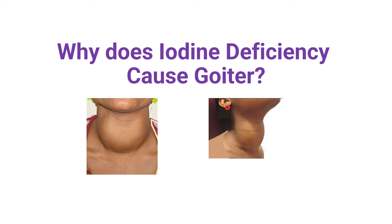Have you ever wondered why deficiency of iodine in the diet causes the thyroid gland to enlarge? Why does goiter occur? Goiter is enlargement of the thyroid gland which is found in the neck.